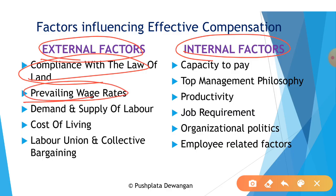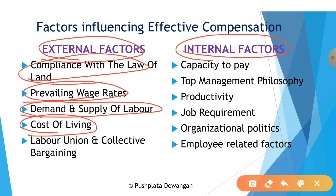The second external factor is prevailing wage rates — wages in a firm are influenced by the general wage level and wages paid for similar occupations in the industry, region, and economy as a whole. Third is demand and supply of labor — wages are the price of services rendered by the worker; the firm must pay a price that brings forth the required supply, which is controlled by individual workers or groups acting through their unions. Fourth is cost of living — wages are normally adjusted for the cost of living index, which tends to vary with the consumer price index.